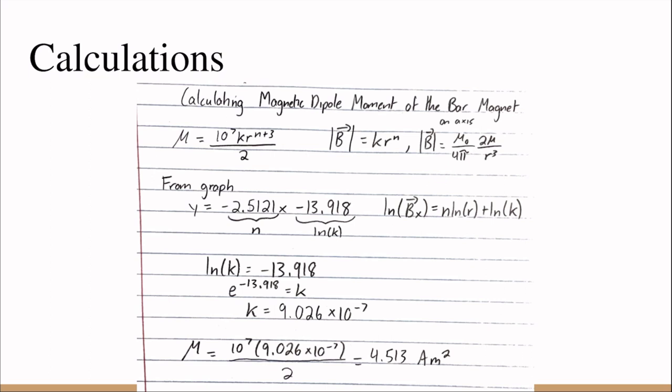From the graph, I was able to find the constants n and ln of k, which I later used to find the constant k, and I was able to plug in those values to find the magnetic dipole moment, which equals 4.513 amp-meters squared.